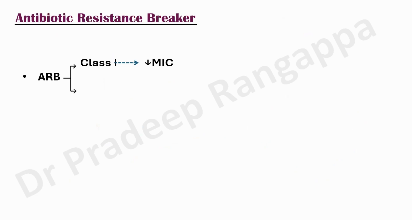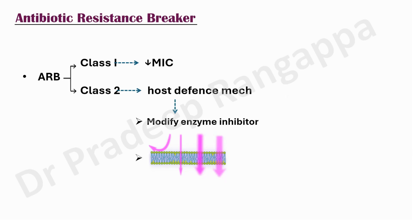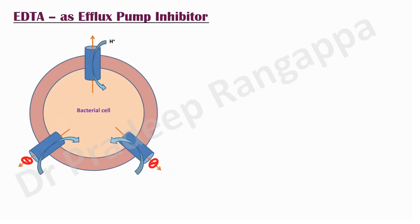Antimicrobial resistance breakers are classified into two types. Class one reduces the MIC; class two helps host defense by modifying enzyme inhibitors and facilitating membrane entry of the molecule. So this antibiotic resistance breaker reduces the MIC, modifies enzyme inhibitors, and helps antimicrobial penetration into the cell membrane.